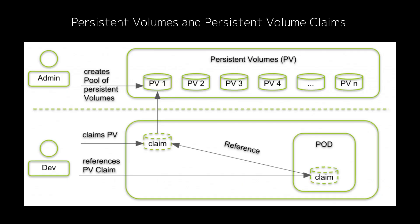Next we have Persistent Volumes (PVs) and Persistent Volume Claims (PVCs). In Kubernetes, pods are ephemeral — they can be created and destroyed frequently. But what if your application needs to store data, like a database or user uploads? Kubernetes solves this with persistent storage. A Persistent Volume is a piece of storage in your cluster provisioned by an administrator, and a Persistent Volume Claim is a request for storage made by a pod — like a pod saying 'I need storage of this size and type.'